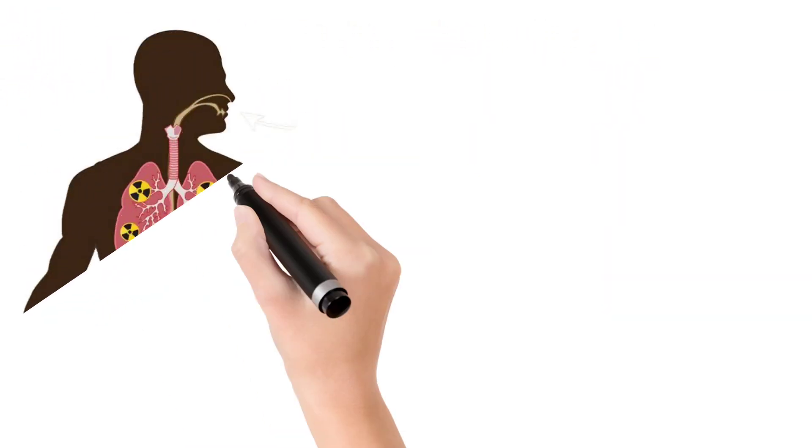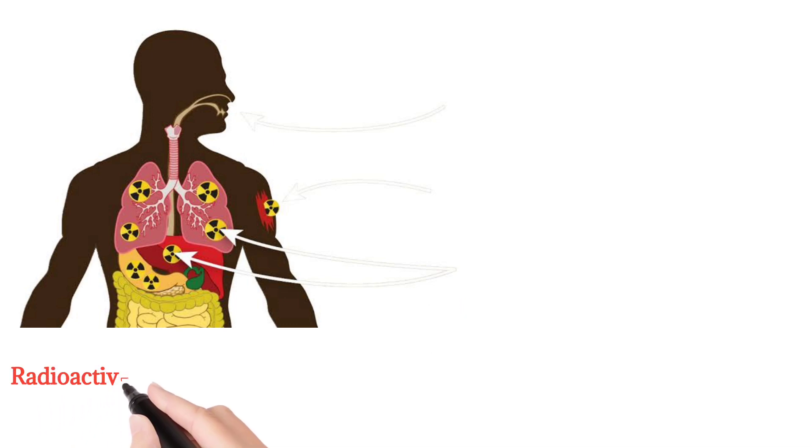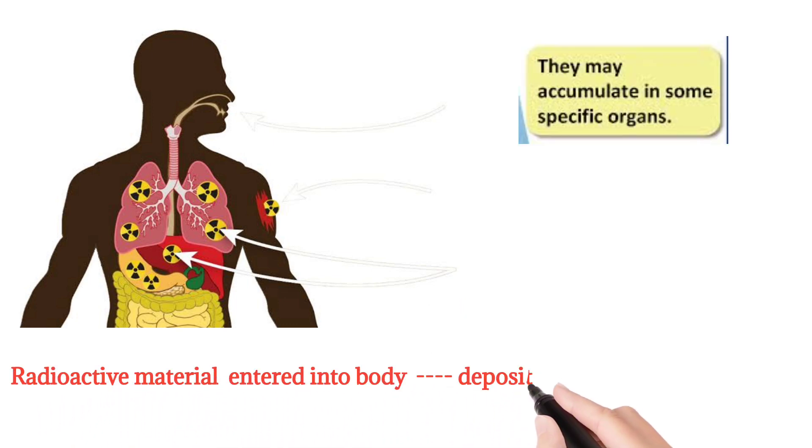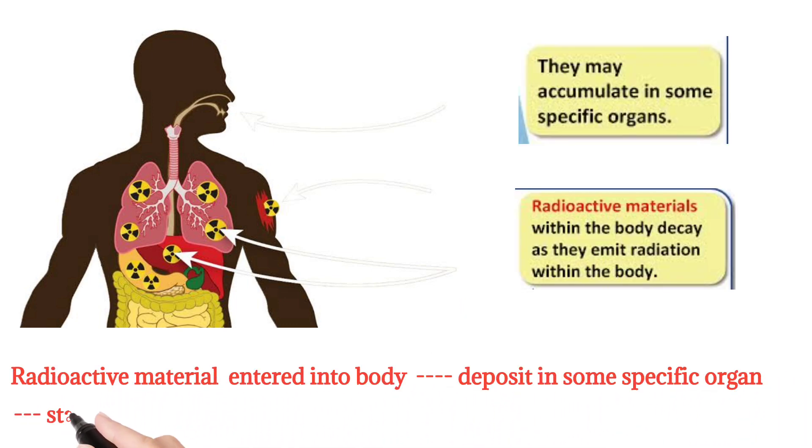After entering the body, radioactive material deposits in some specific organ and starts to decay or disintegrate as it emits radiation within the body. This deposited dose inside the body is called the committed dose.